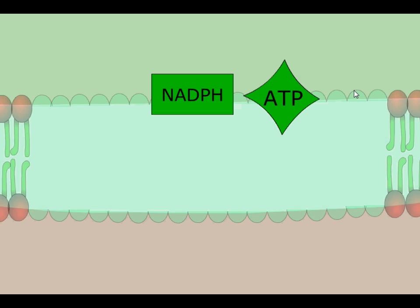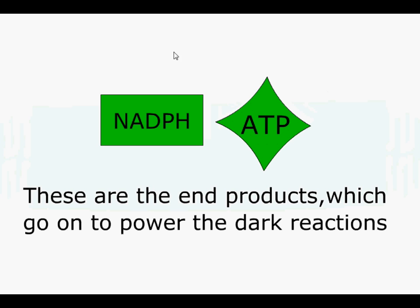Most importantly, two things are coming out of the light reactions to power the dark reactions. They're dark reactions for a reason—there's no light energy. The dark reactions need to get their energy from the light reactions. They're going to get electrons in NADPH and energy in ATP. That is what you need to know for the light reactions.